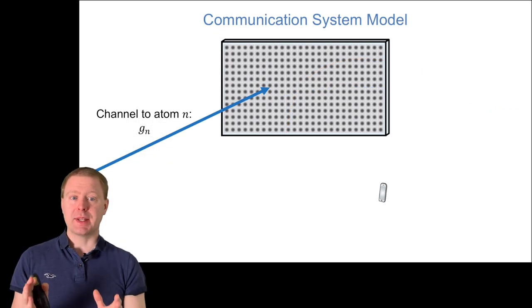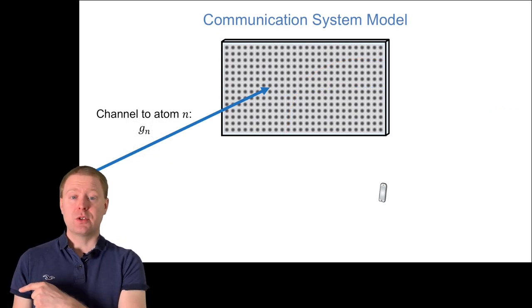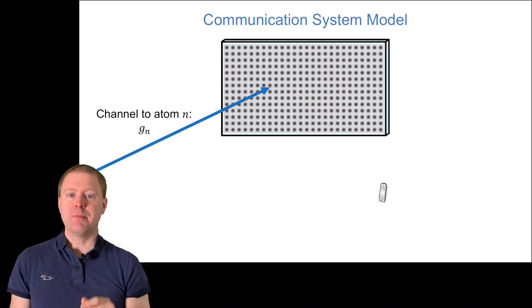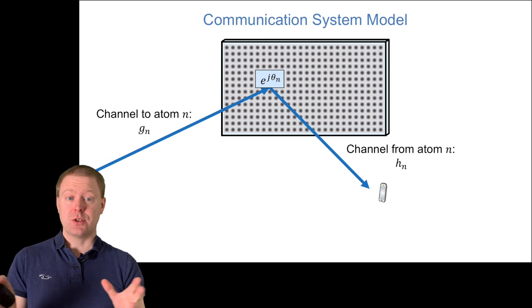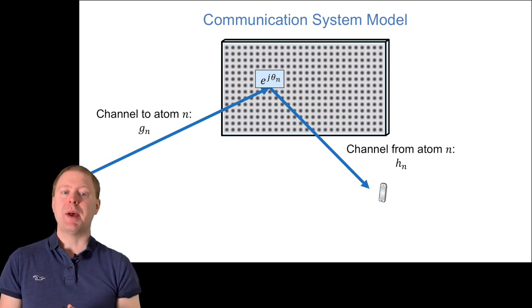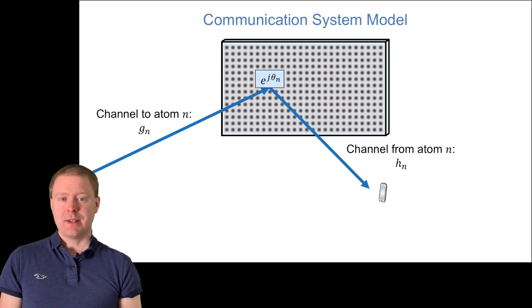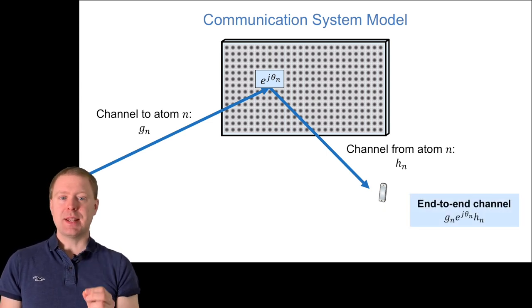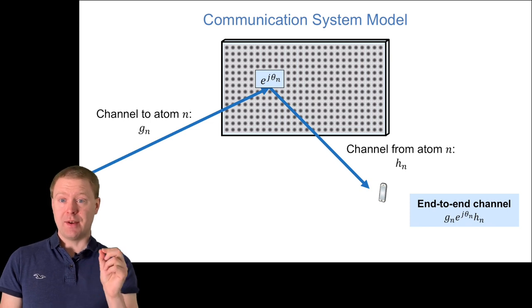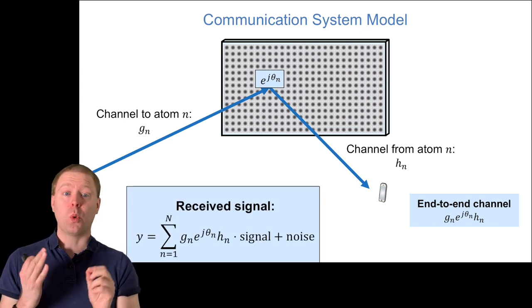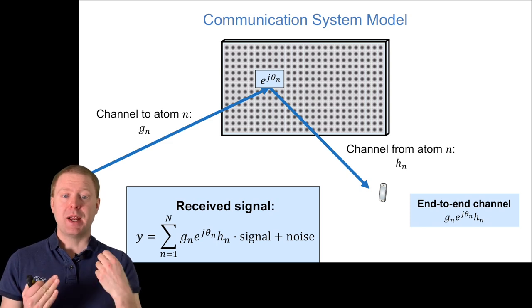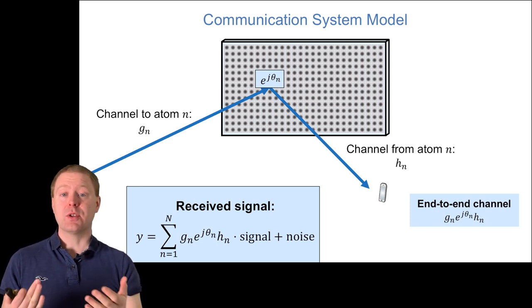Looking at the communication system model: the signal coming to atom number n has channel g_n. We phase shift the signal at the surface, then it's re-transmitted toward the receiver with channel h_n from atom n to the user. The end-to-end channel is g_n times e^(jθ_n) times h_n—the product of three terms. The total received signal is the sum over all atoms of this end-to-end channel, multiplied by the transmitted signal, plus noise.